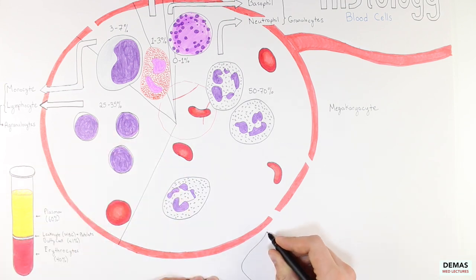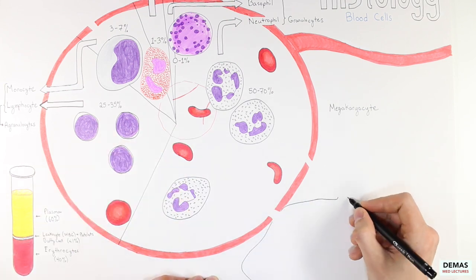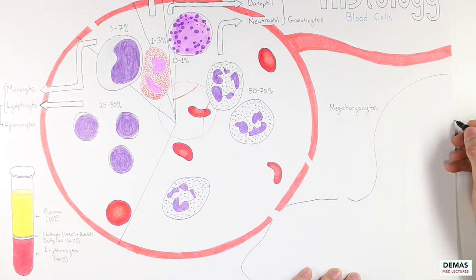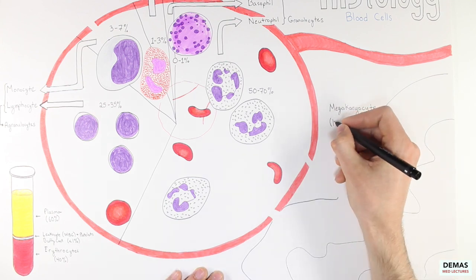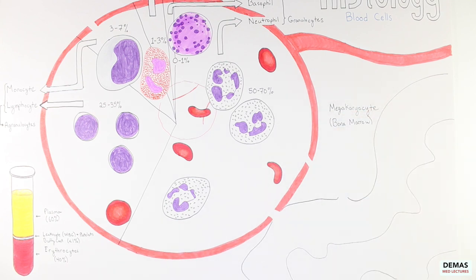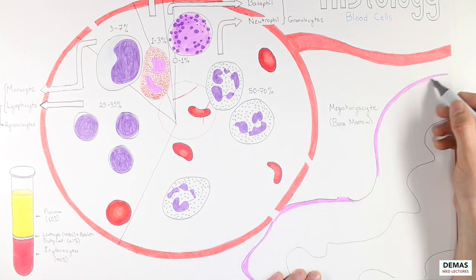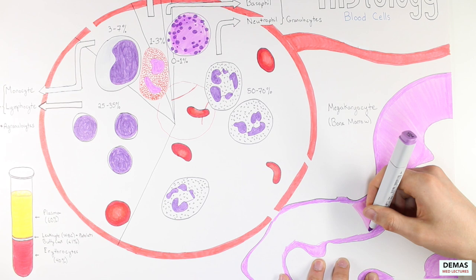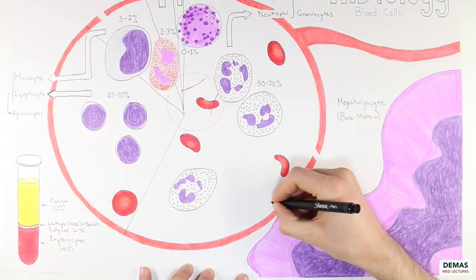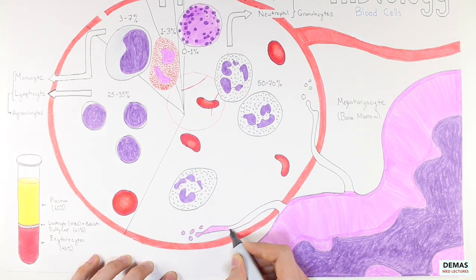The first cell type I would like to draw in is the megakaryocyte. This cell type is very large in comparison to all the other cell types we have been describing up until now. Megakaryocytes are found adjacent to the sinusoids or blood vessels of the bone marrow. Megakaryocytes are responsible for forming platelets which are anuclear cell fragments that bud off from the megakaryocyte. These platelets then enter the blood and are transported systemically.